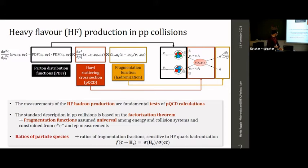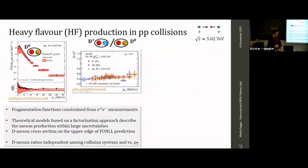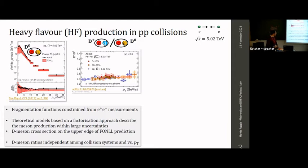This factorization approach successfully works for the description of charm meson production. On the left you see the D0 cross section, which is described within uncertainties by the FONLL approach. In the middle, the meson-to-meson ratio for charm flavor is almost flat in transverse momentum, and the ALICE measurement does not show a significant dependence on the collision system — in red central Pb-Pb, in yellow semi-central Pb-Pb, and in blue proton-proton.